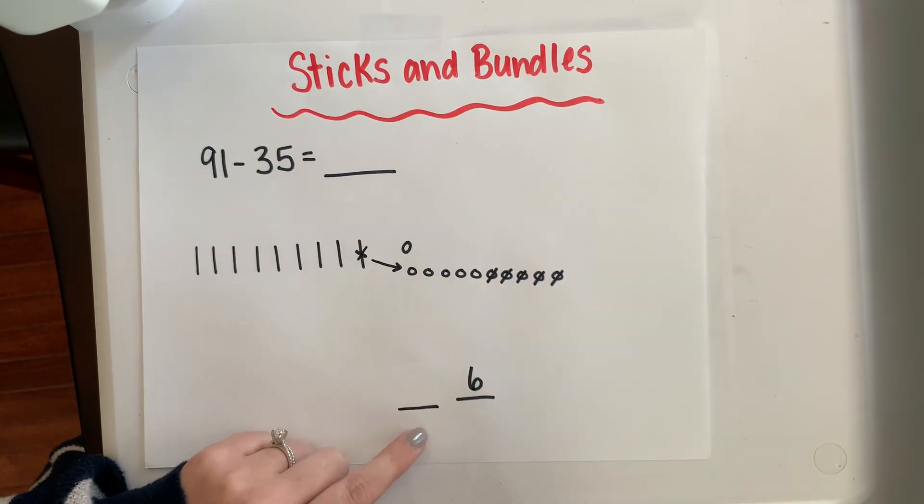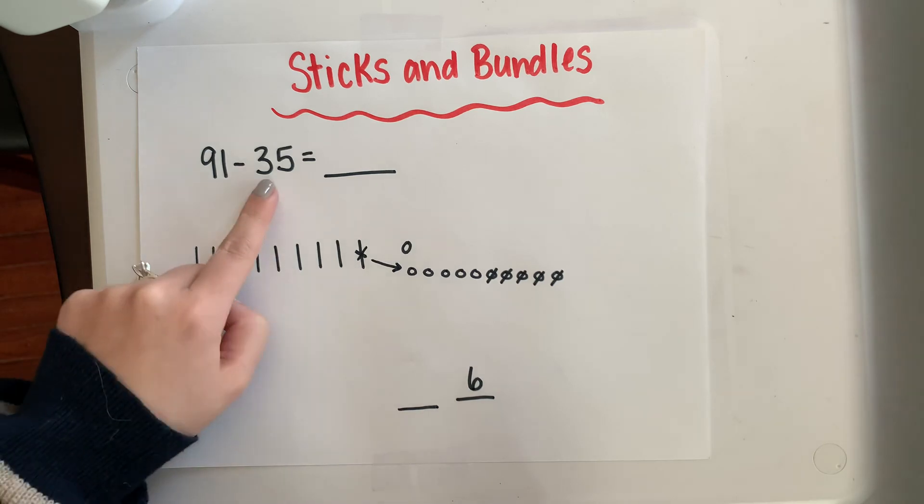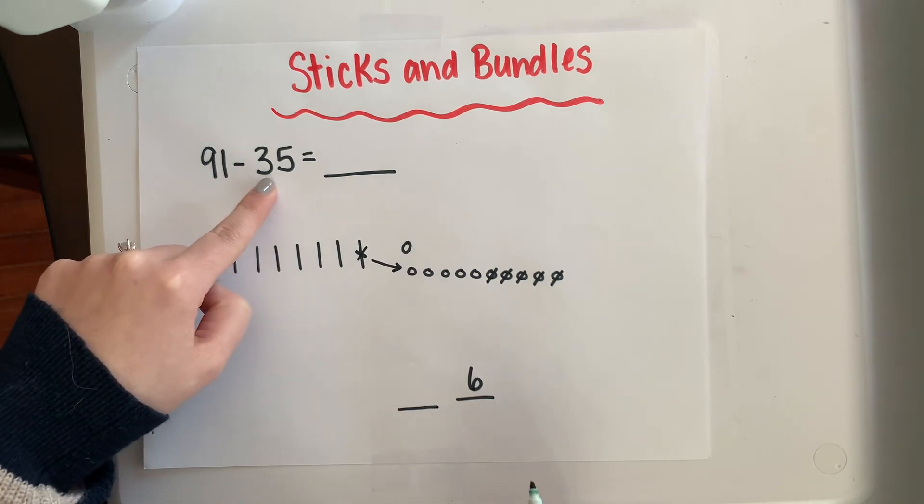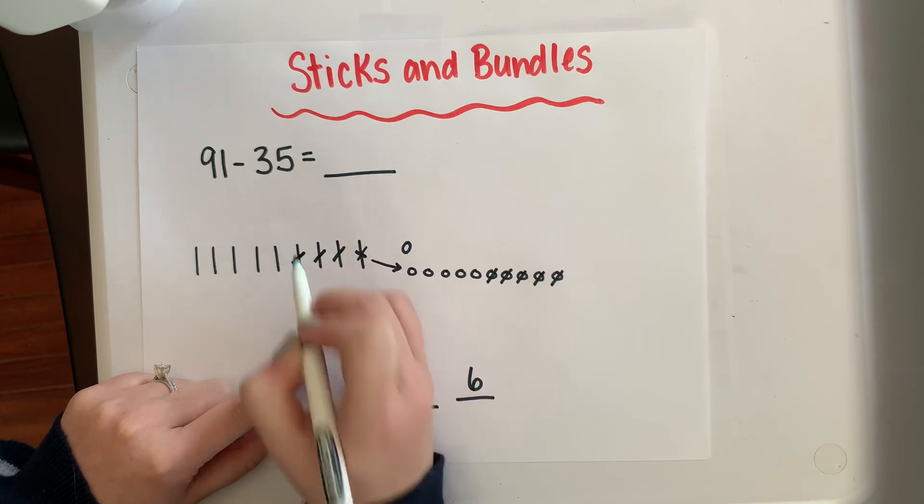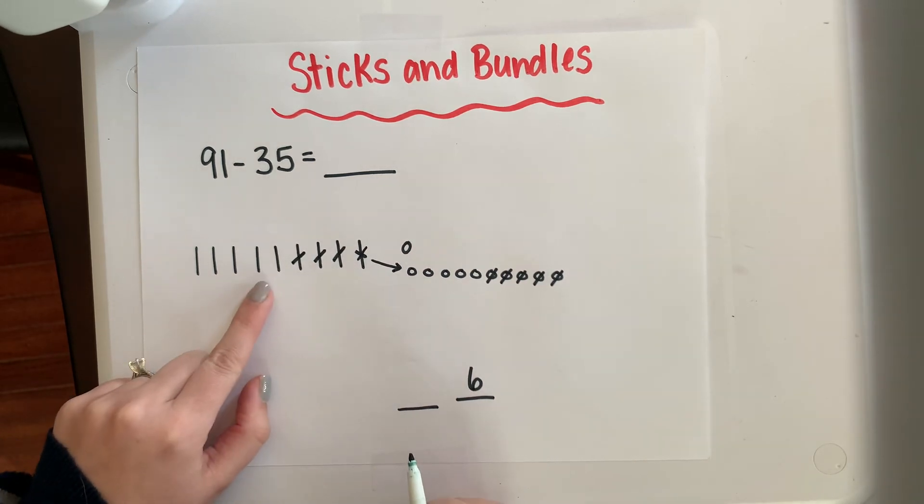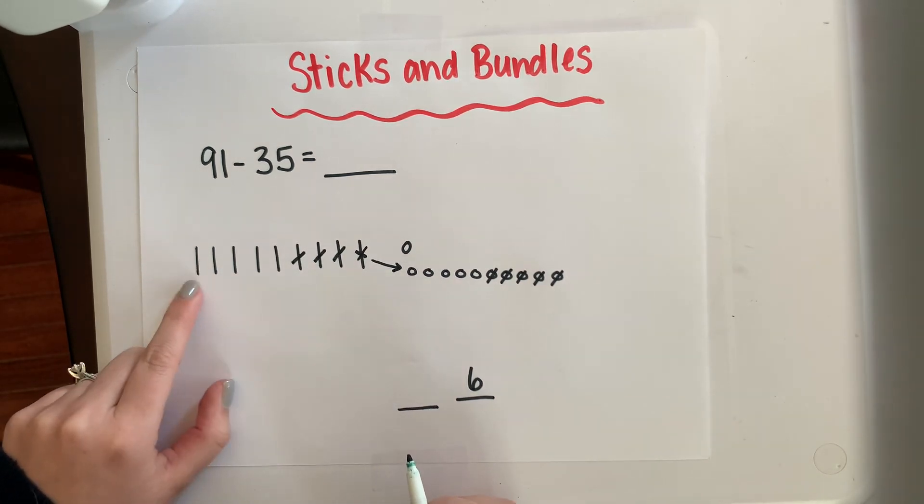Now I have to figure out what's in my tens place. I'm supposed to take away three tens. So I'm going to go 1, 2, 3, and I have 1, 2, 3, 4, 5 tens left over.